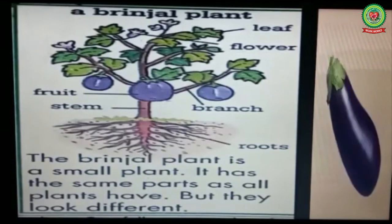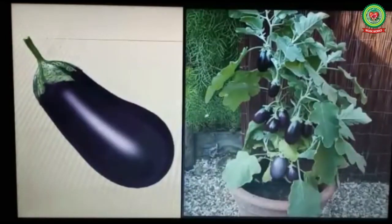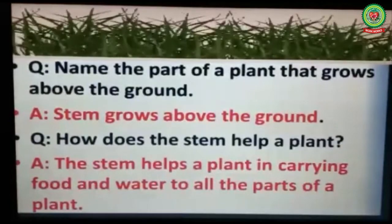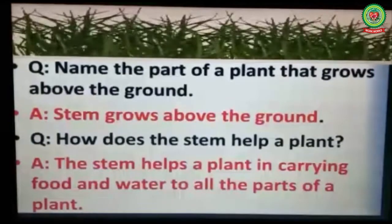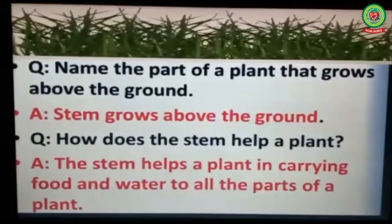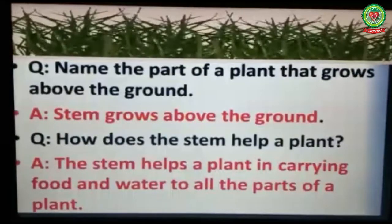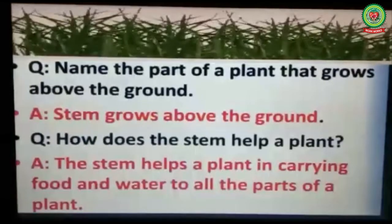A brinjal plant looks different from other plants because it is small in size. Now let us discuss some questions of this chapter. Name the part of plant that grows above the ground — stem grows above the ground. Number two: how does the stem help a plant? The stem helps a plant by carrying food and water to all parts of a plant.